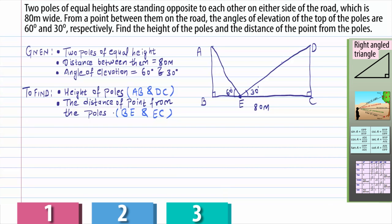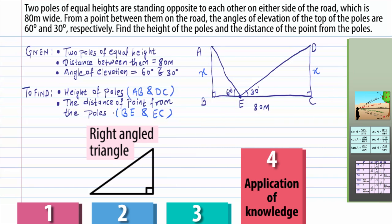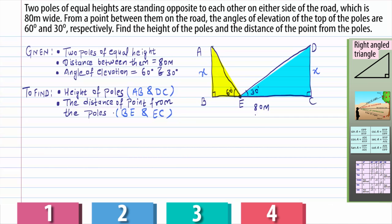Let me also denote the height of the poles as X meters. So AB is X and DC will also be X because they both are of equal height. So in this diagram, we can see there are two right-angled triangles, ABE and DCE. Let's consider any one of them.